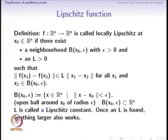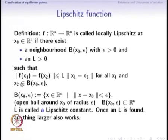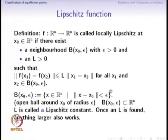The inequality required is: the norm of f(x1) minus f(x2) is less than or equal to L times the norm of x1 minus x2, and this must hold for all x1 and x2 in the neighborhood of x0. This neighborhood is called a ball B centered at x0 of radius epsilon. Precisely, B is defined as the set of all points x such that the distance of x from x0 is strictly less than epsilon — points exactly epsilon away are not included. Hence this is called an open ball around x0 of radius epsilon.